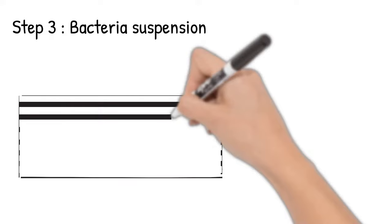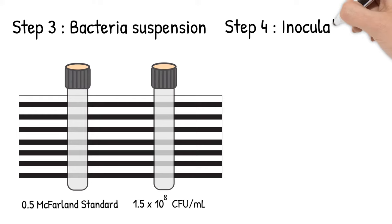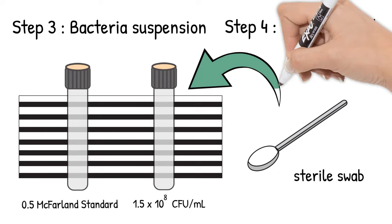Step 3: Compare the bacteria suspension with 0.5 McFarland standard, making sure that the suspension is the same turbidity as the 0.5 McFarland standard. Step 4: Take a sterile swab and dip it once in the prepared bacteria suspension.